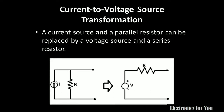In practical current sources, the resistance is in parallel. So a current source and a parallel resistance can be replaced by a voltage source and a series resistance. The value of the replacement voltage is V equals I times R, where I is the current of the current source and R is the parallel resistance. The series resistance is kept the same value.